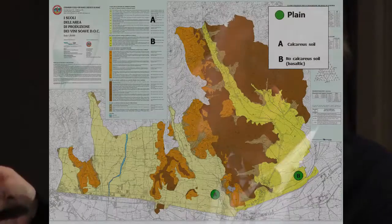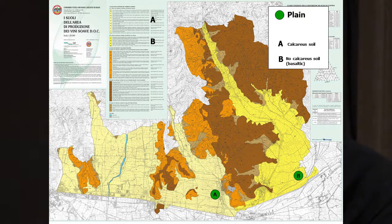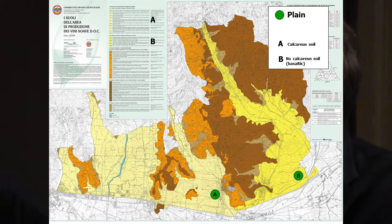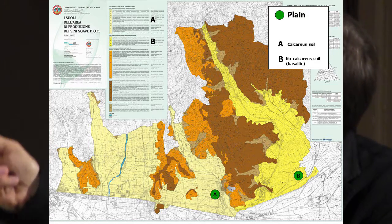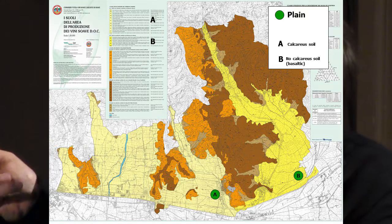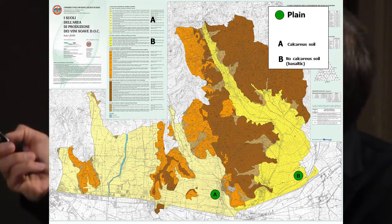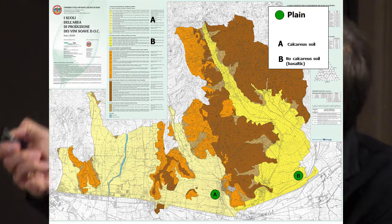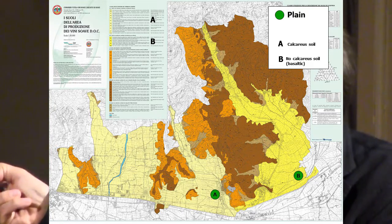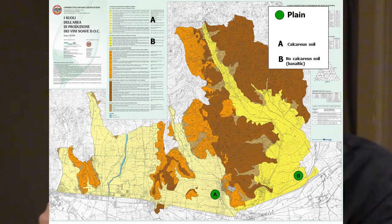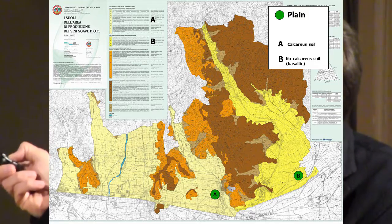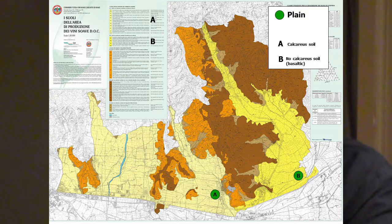So we have to look at the variety and try to find the exact match between variety and soil. In Soave, for example, where we have Garganega to obtain Soave wine, the plain and the hills are divided into two different kinds of soil — volcanic soil in one case and calcareous soil in the other. You can see that calcium carbonate in calcareous soil is very high — 45–50% total and around 90% active calcium carbonate — so the pH is around 8. In the basalt soil, calcareous content and limestone are very low, and the pH is a little lower too.